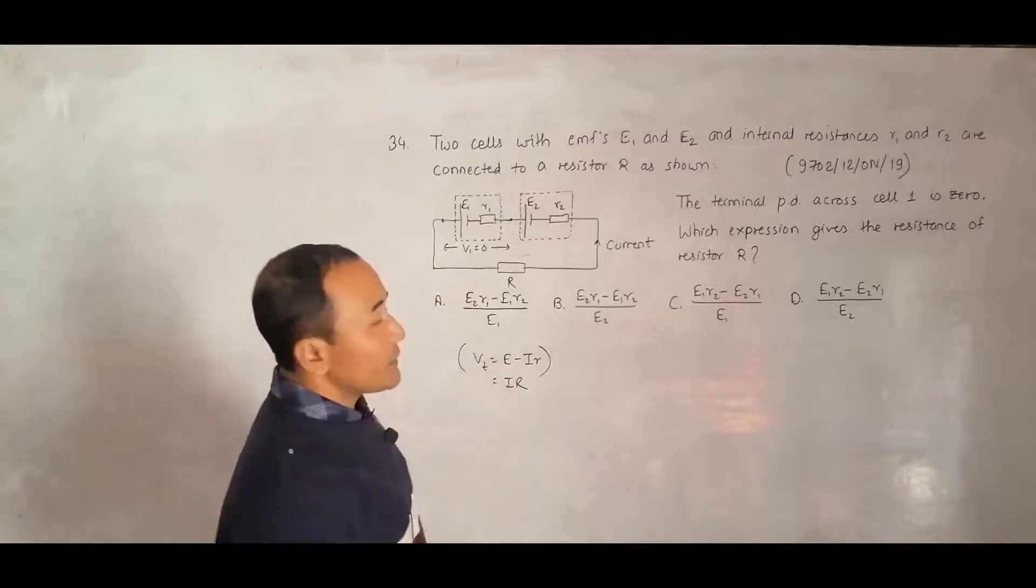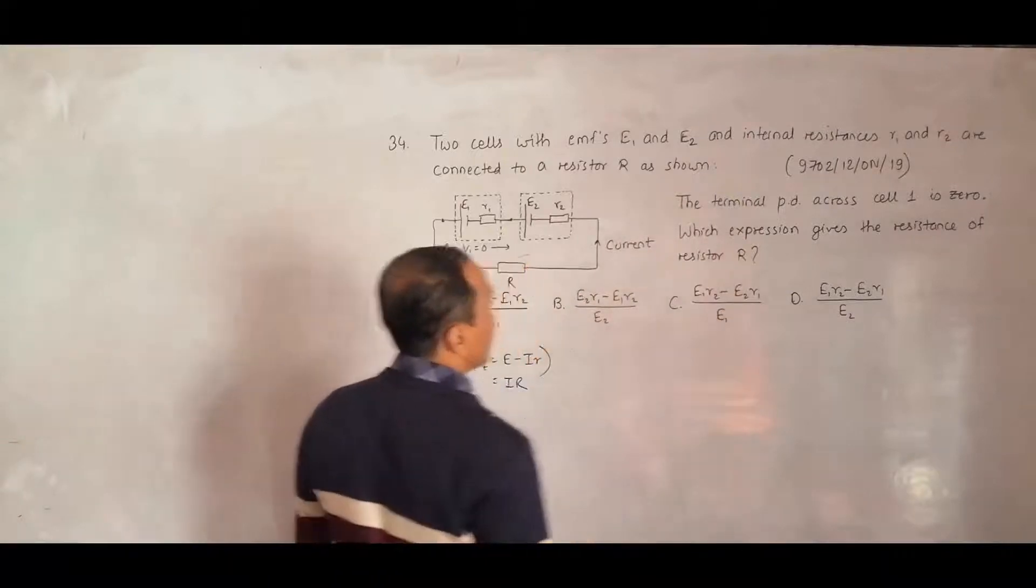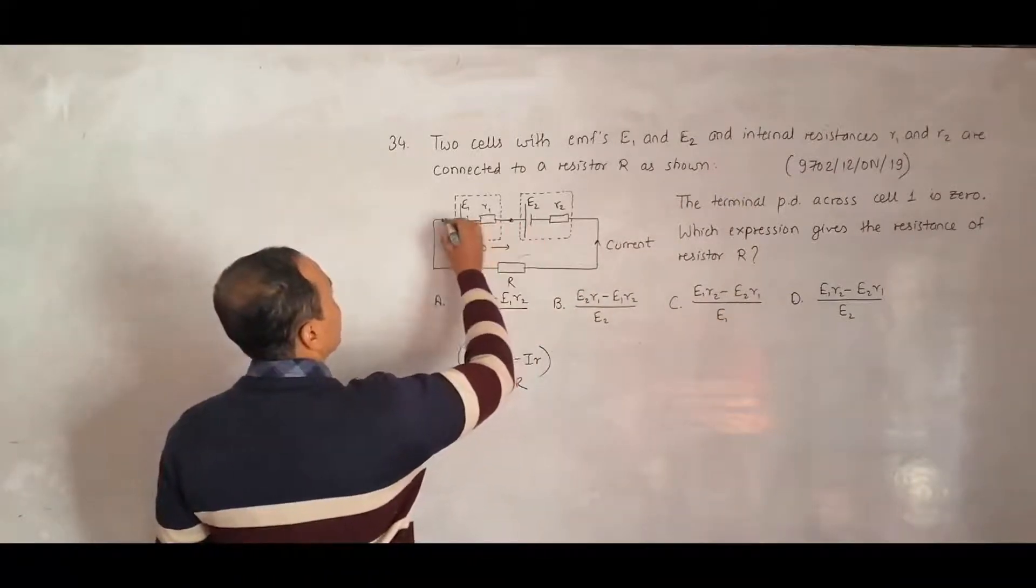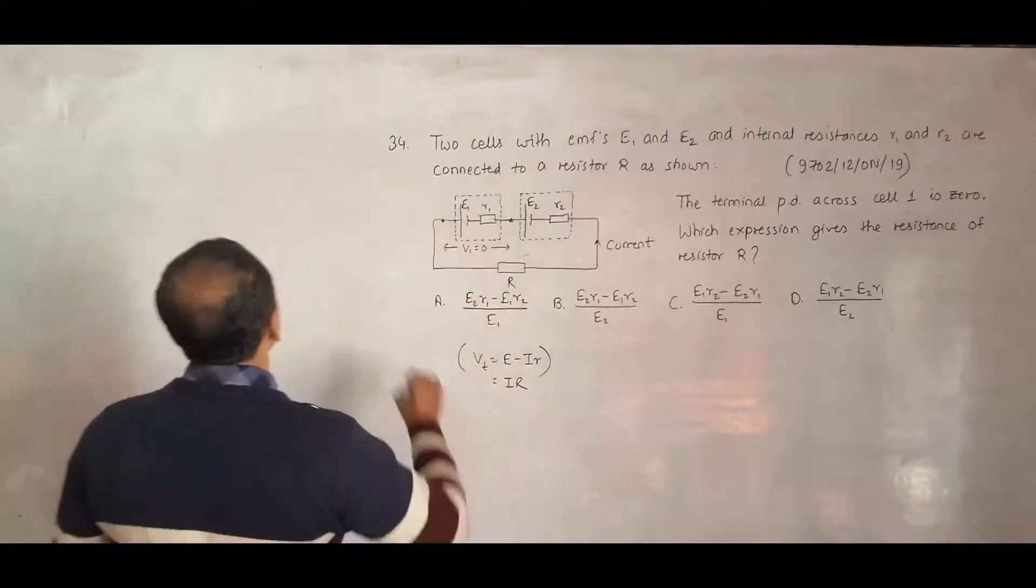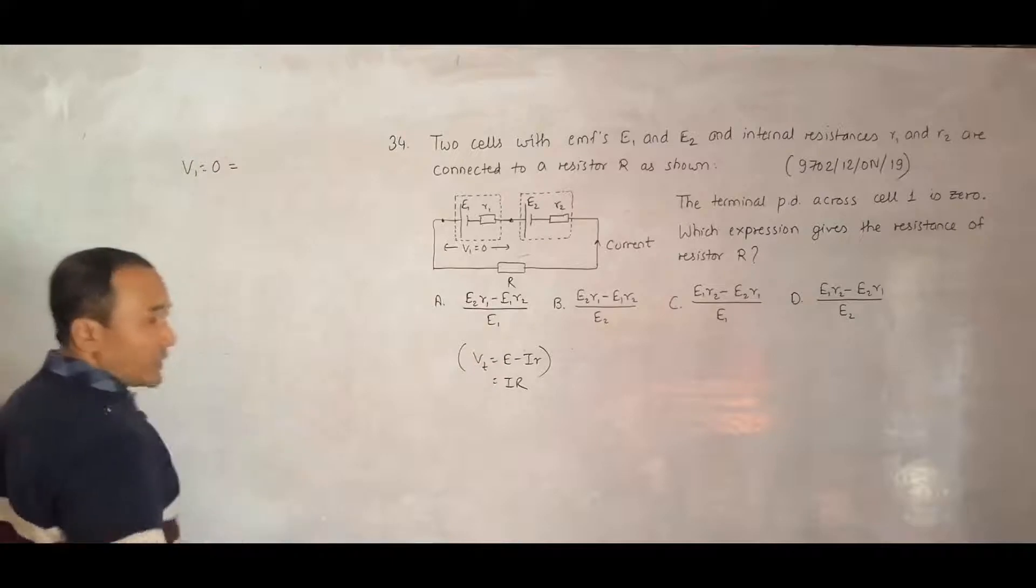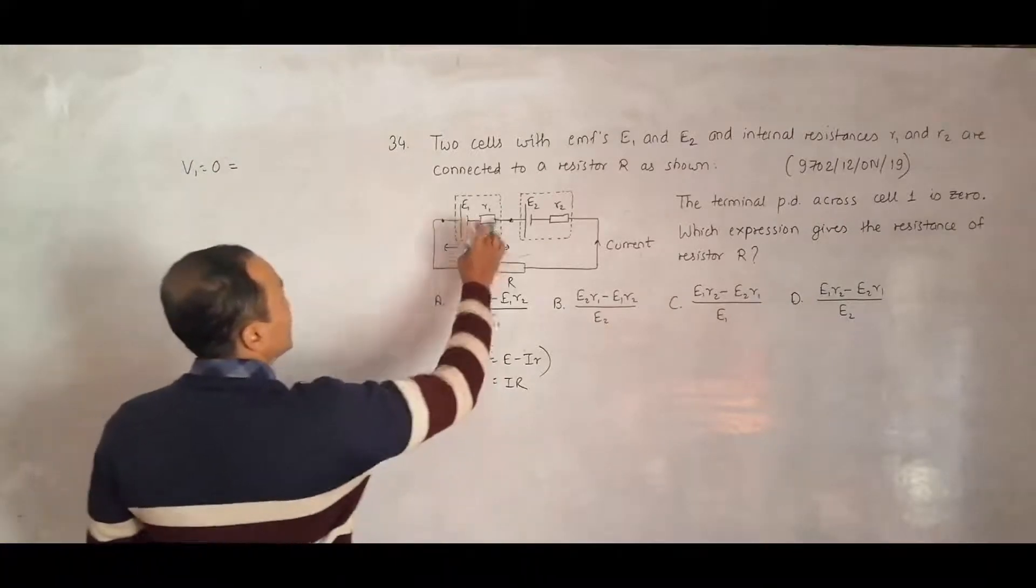Let us apply the same formula here. What it says is, the terminal PD across cell 1 is 0, so that means the PD across this thing is equal to 0. Let me write here, V1 is equal to 0.